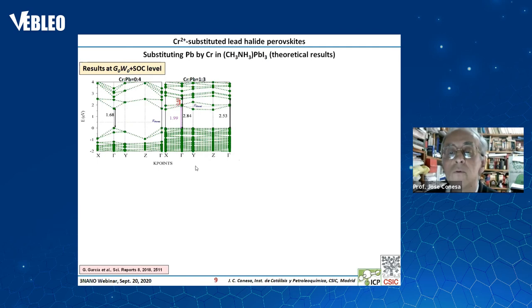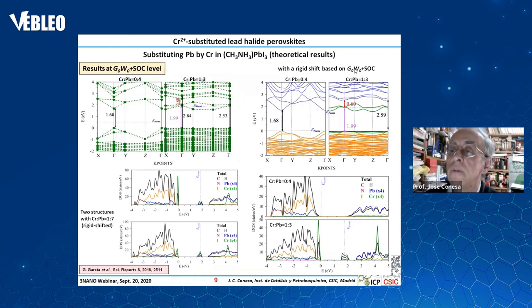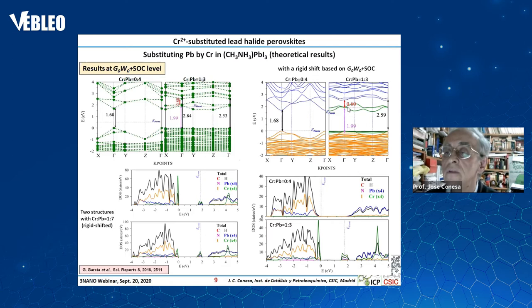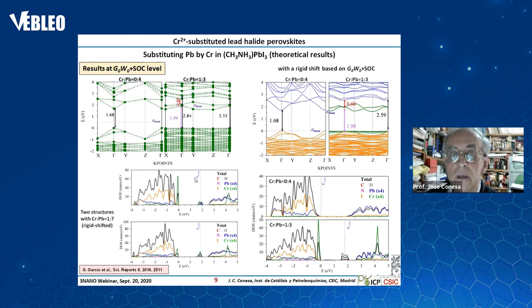If we do a rigid shift based on this GW calculation, then on the more detailed band structure we can again see an ingap band well separated from the valence band and the conduction band. In the case of a lower substitution level by chromium, we still have the same effect — an ingap band crossed by the Fermi level — with no problem even when we decrease the concentration of chromium.